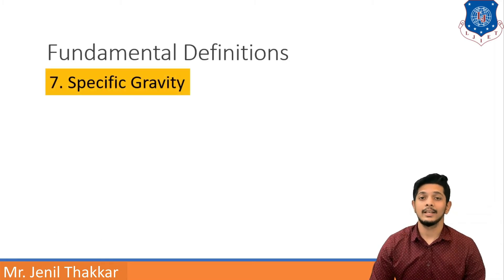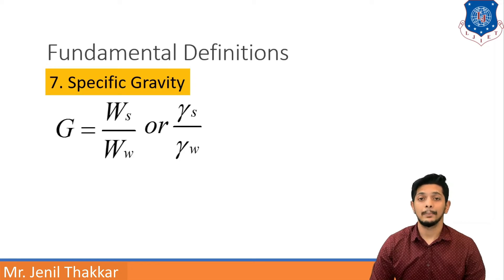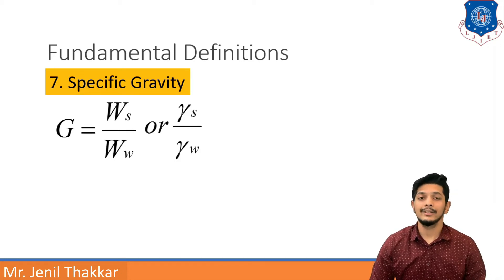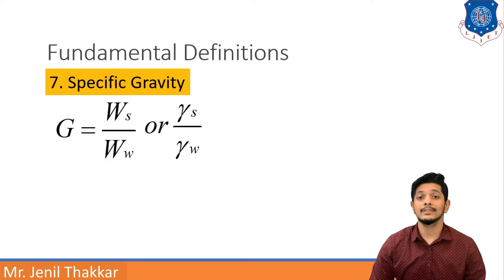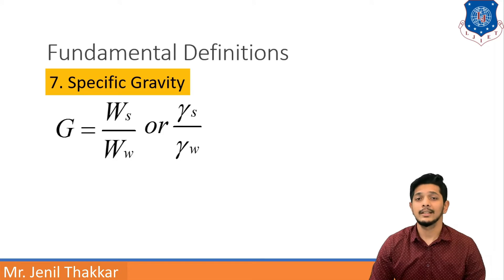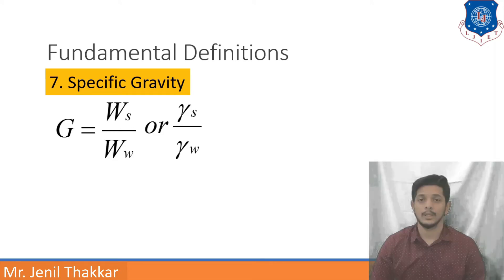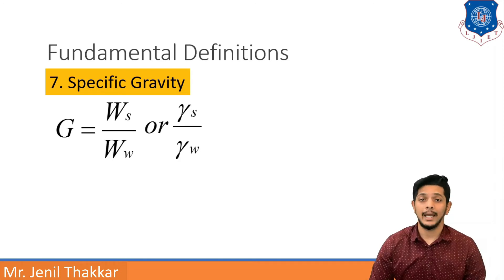Moving to the next definition, that is Specific Gravity. It is denoted by capital G. G is equal to Ws upon Ww, where Ws means weight of solids and Ww means weight of water. Specific Gravity G can be defined as the weight of soil solids of a given volume to the weight of distilled water of the same volume. It is also denoted by gamma S upon gamma W. Specific Gravity is a unitless quantity, written as 2.5 or 2.7, etc.